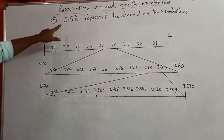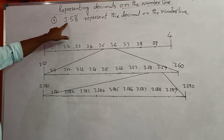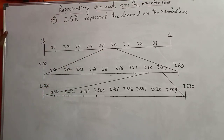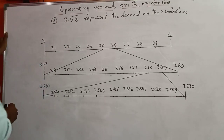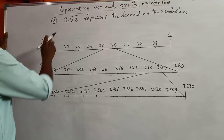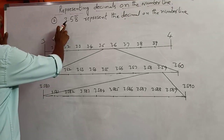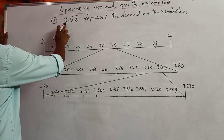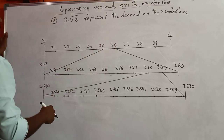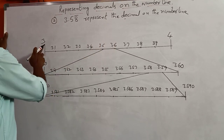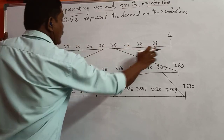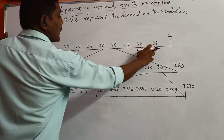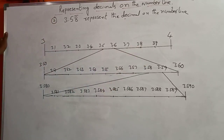The given non-terminating decimal is 3.58 bar. So we take the whole numbers 3 and 4. On the scale, from 3 to 4, I divide this centimeter into 10 equal parts.